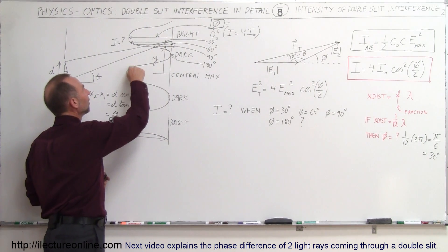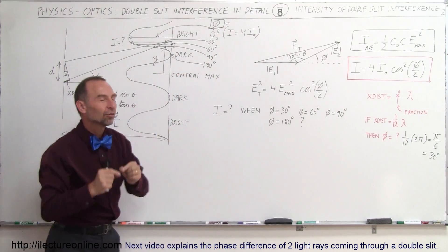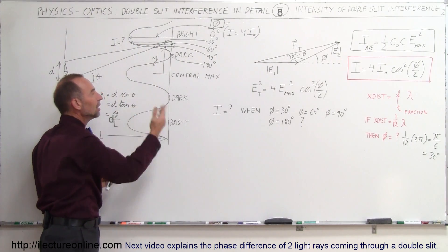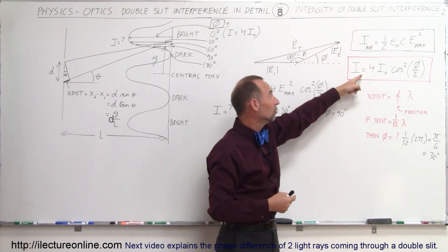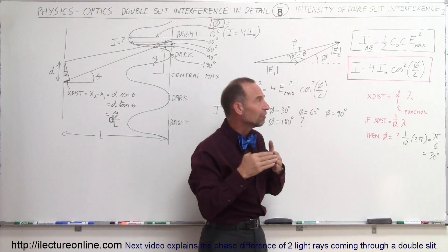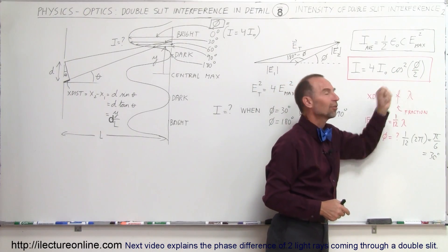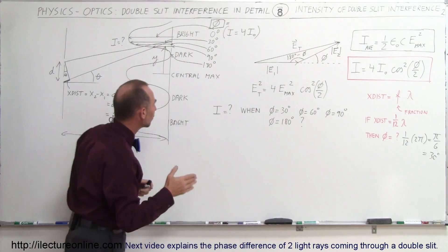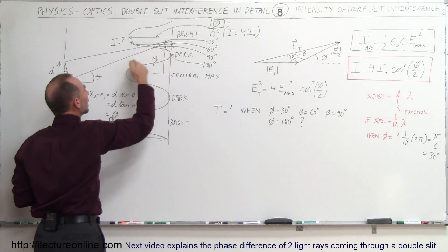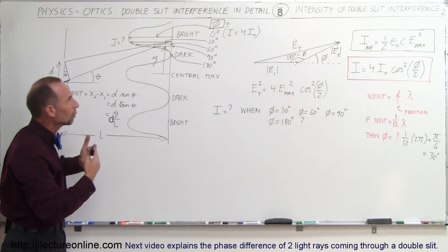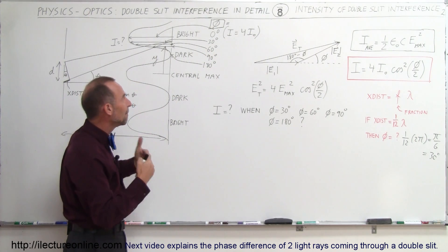Where there is no phase difference at all, the intensity ends up being four times the intensity of each individual beam. Anywhere in between, the intensity anywhere along the screen equals four times the intensity of each individual wave times the cosine squared of the phase difference divided by two. In this video we're not yet showing how to relate the angle or screen location to the phase difference — we'll do that in a future video. Here we'll just pick some arbitrary phase differences to find the intensity.